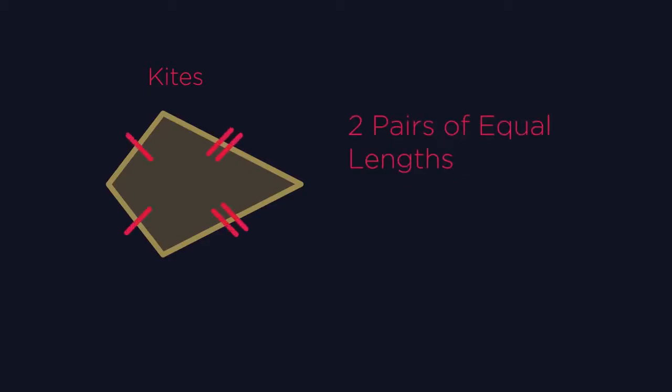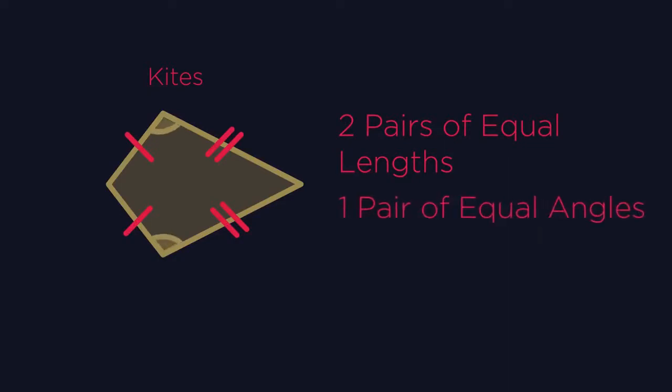They have two pairs of sides that are equal in length. They always have one pair of equal angles. And they're not so important but worth mentioning. The diagonals cross at 90 degrees.